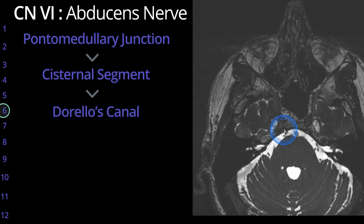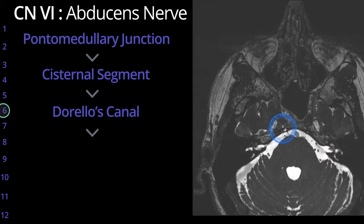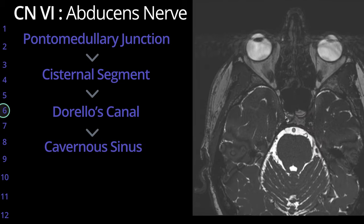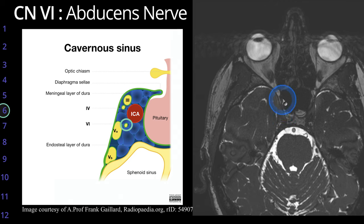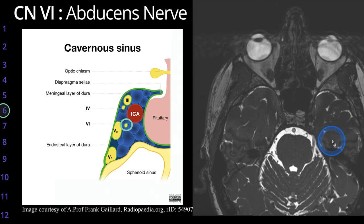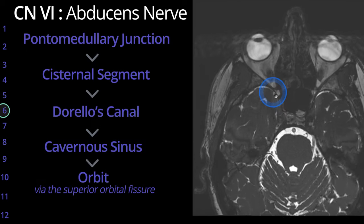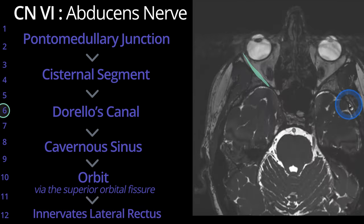We then lose good visualization of the cranial nerve on this sequence. However, we know it passes anteriorly through the cavernous sinus proper. While cranial nerves 3, 4, and the ophthalmic and maxillary divisions of cranial nerve 5 pass along the lateral wall of the cavernous sinus, cranial nerve 6 actually passes through the cavernous sinus proper, the only cranial nerve to do so. It exits into the orbit through the superior orbital fissure and innervates the lateral rectus muscle.